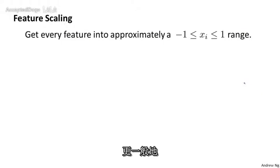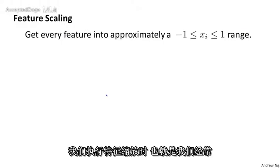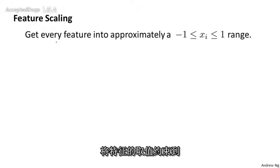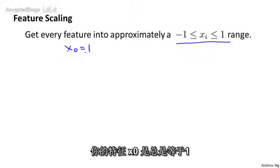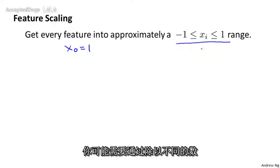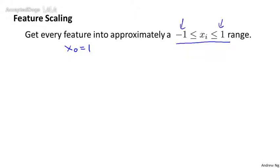More generally, when performing feature scaling, what we often want to do is get every feature into approximately a -1 to +1 range. And concretely, your feature x0, that's always equal to 1, so that's already in that range. But you may end up dividing other features by different numbers to get them into this range. And the numbers -1 and +1 are not too important.